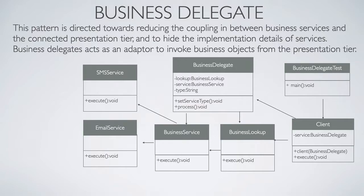This design pattern has multiple components such as a client that would have the presentation tier code such as UI, a Business Delegate that is an entry point class for client entities to provide access to business service methods, and a Lookup Service. The lookup service object is responsible to get the business implementation and provide business object access to the Business Delegate object.